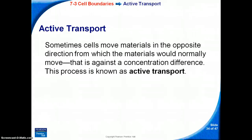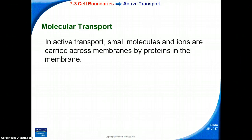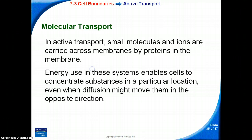Active transport: sometimes cells move materials in the opposite direction from which the material would normally move — against a concentration difference. This process is known as active transport, and it requires energy. In active transport, small molecules and ions are carried across membranes by proteins in the membrane. Energy use in these systems enables cells to concentrate substances in a particular location, even when diffusion might move them in the opposite direction.